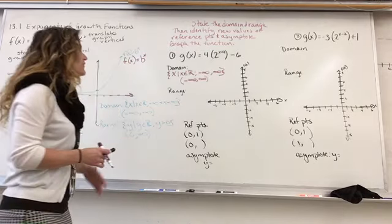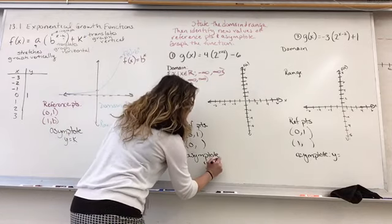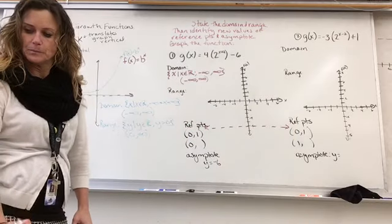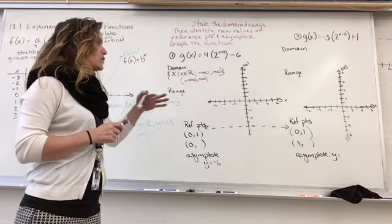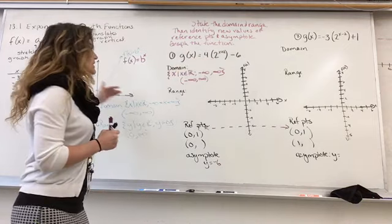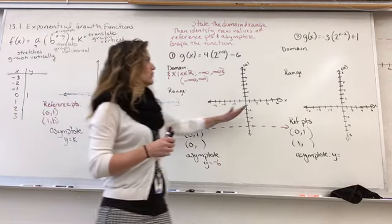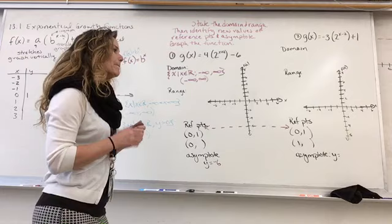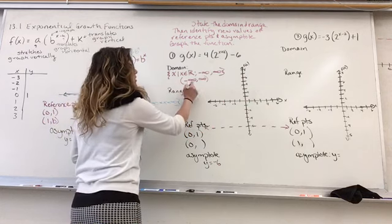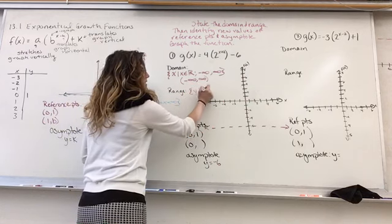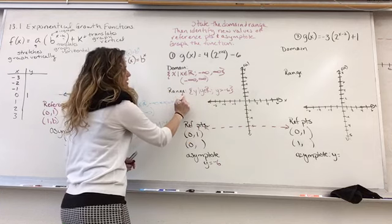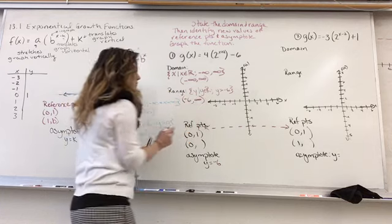I know my asymptote is equal to the K value. Our K value is negative 6, so at negative 6 I have an asymptote. My range: Y such that Y is an element of the reals, Y is greater than negative 6. Negative 6 is the bottom point and the top point is positive infinity. In interval notation: (negative 6, positive infinity).